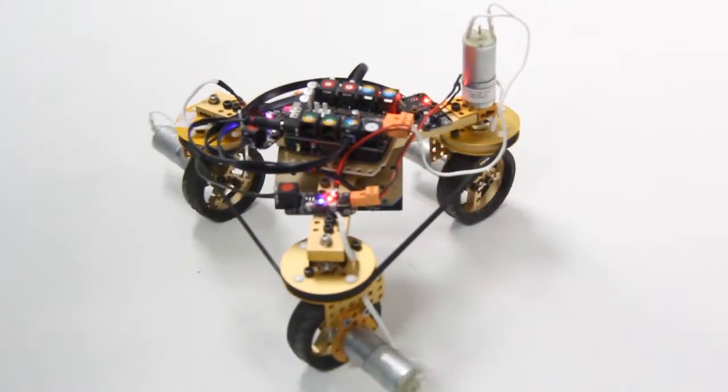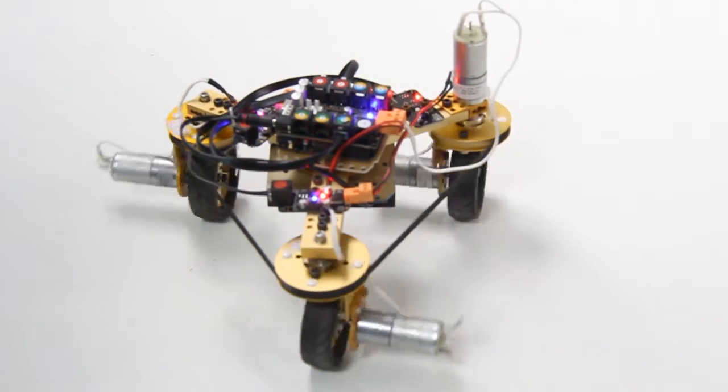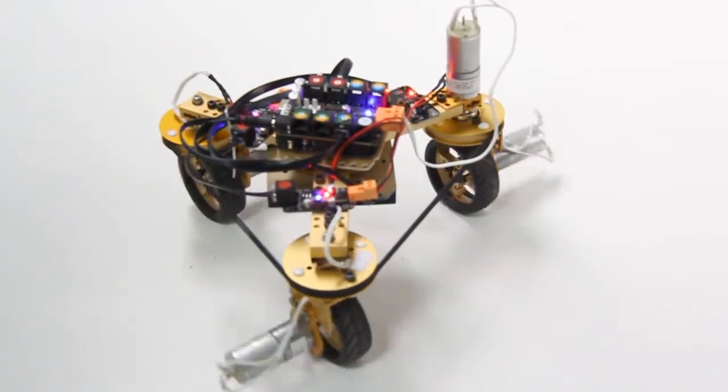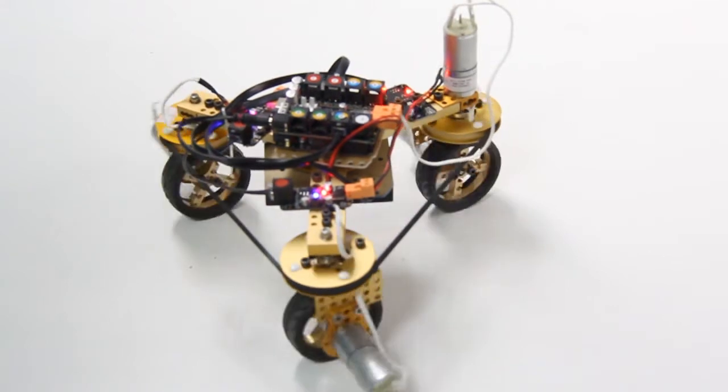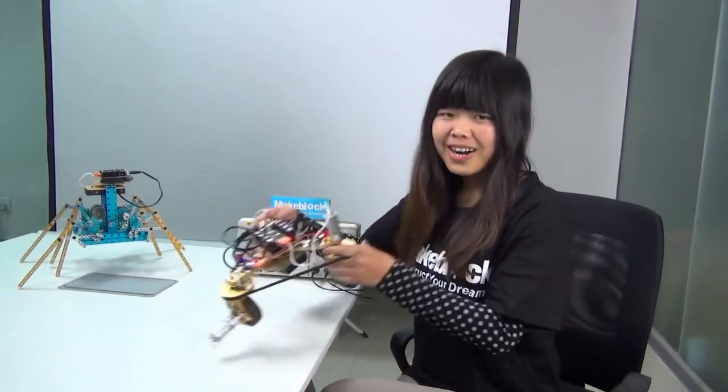We use timing belt to control the three wheels so that the three wheels can run at the same time, make the tank go in circles. Now let's check how it works.